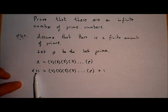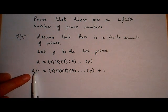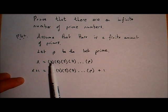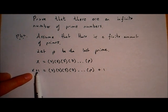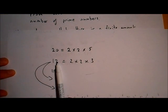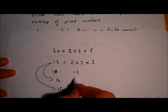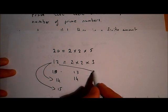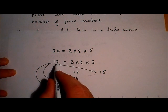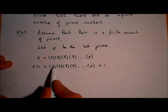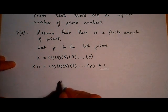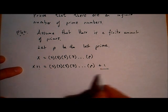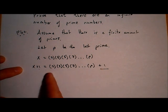Is X plus 1 divisible by any primes? Well, X is divisible by 2 because we multiplied 2 by 3 by 5 by 7 to make it — but 2 won't divide into X plus 1 because we only added 1. Just like 2 divides into 12, but if I add 1 I get 13 and 2 won't divide into 13. Similarly, 3 won't divide into X plus 1, 5 won't divide into it, and P won't divide into it — because we only added 1. So if no prime numbers divide into this number, that must mean this number is itself a prime number.